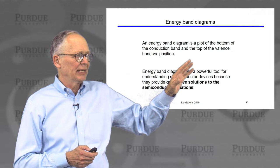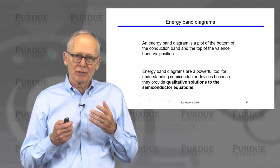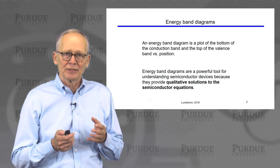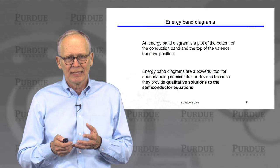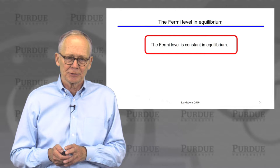An energy band diagram, just to remind you, is a plot of the bottom of the conduction band and the top of the valence band versus position. Energy band diagrams are a very powerful technique for developing a qualitative understanding of the solution to a set of semiconductor equations. Usually the first step in understanding a device is to draw an energy band diagram, and if we can understand the operation in terms of energy band diagrams, then we're prepared to write down a few equations and solve them to get analytical expressions.